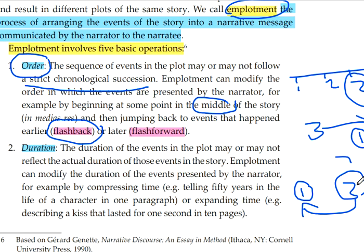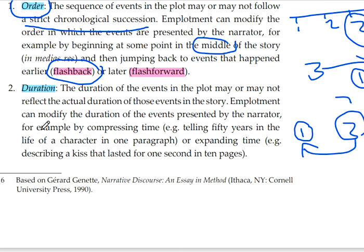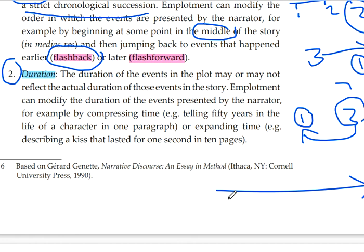Number two: Duration. Imagine events one through four — the dragon poisoning the lake, conversation between George and the princess, and so on. The narrator has flexibility to focus time on specific events he wants the reader to focus on, and can give other events only a short time. The duration of events in the plot may or may not reflect the actual duration of those events in the story.